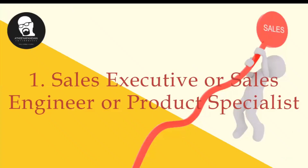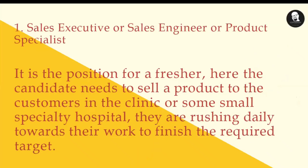The first designation — this is actually not a promotion. Once you join as a sales fresher or sales engineer fresher in any company, this designation will be called sales executive, sales engineer, or product specialist. This is the first designation you can get. The roles and responsibilities are: you are not supposed to visit multi-specialty hospitals because you must first have some training. The company allows you to go to clinics or specialty hospitals. Once you gain experience, they allow you to move to the next higher level through promotion.